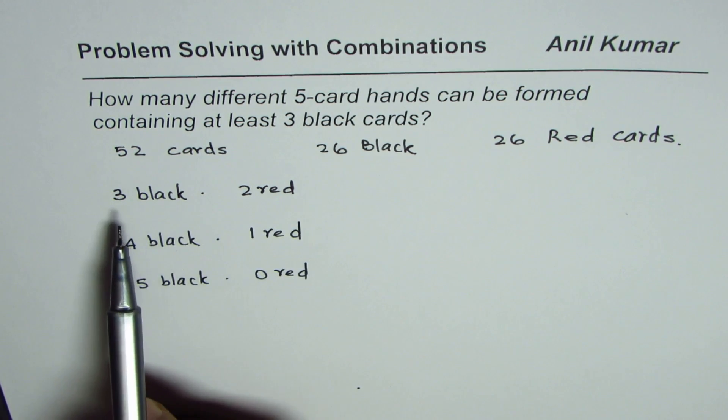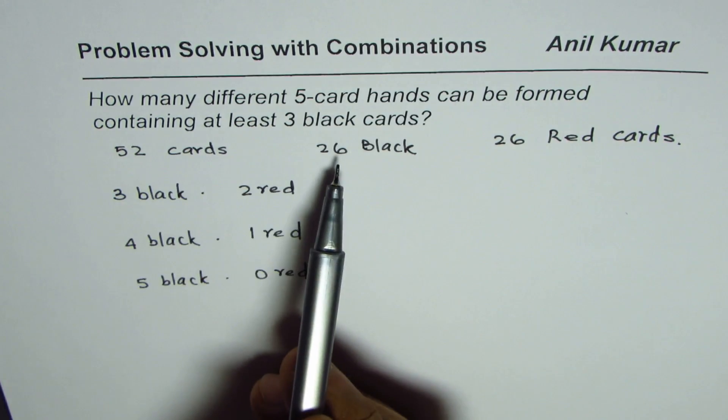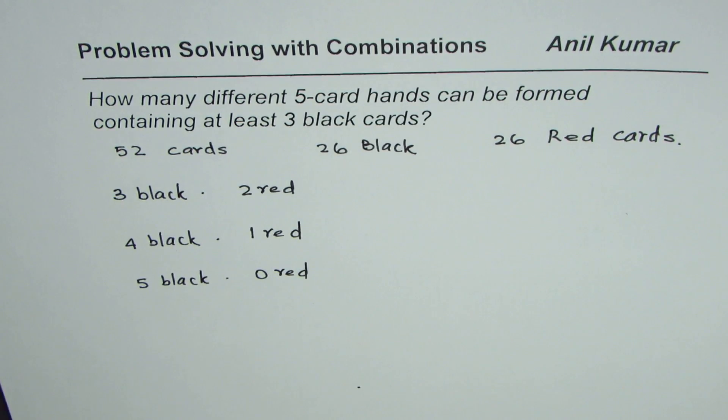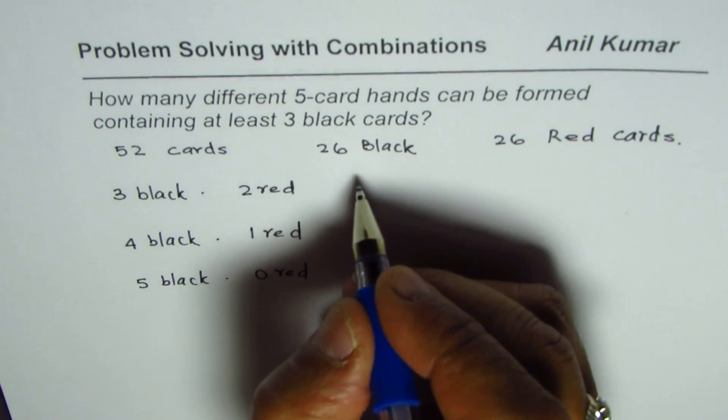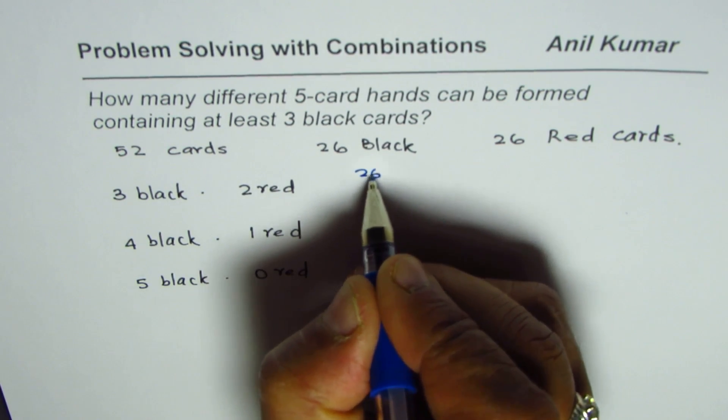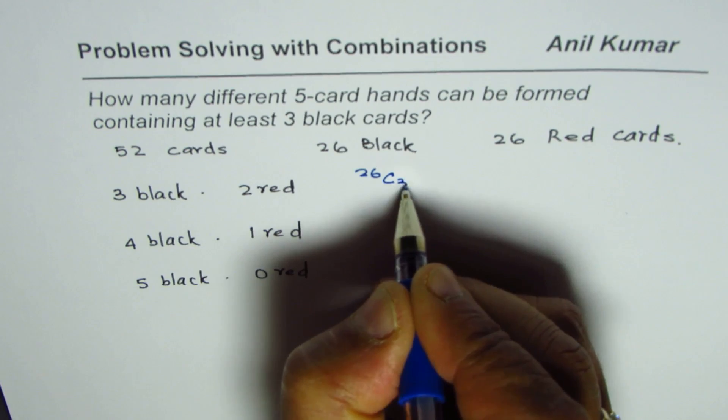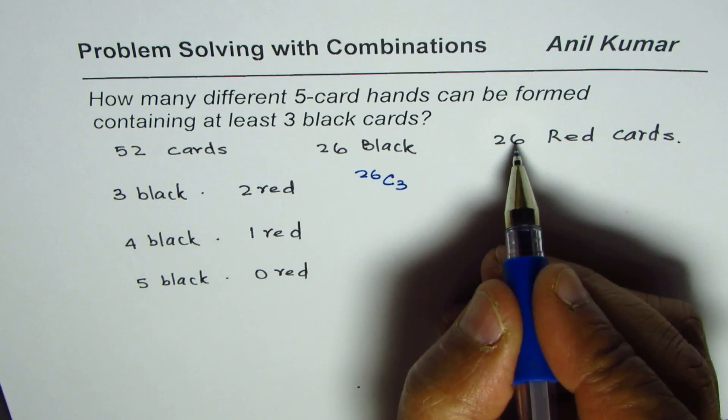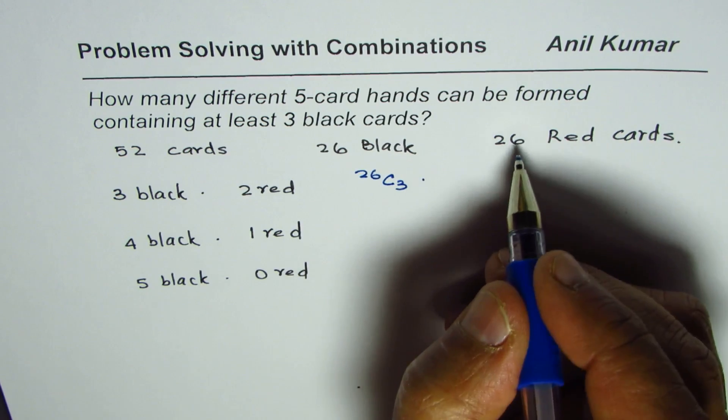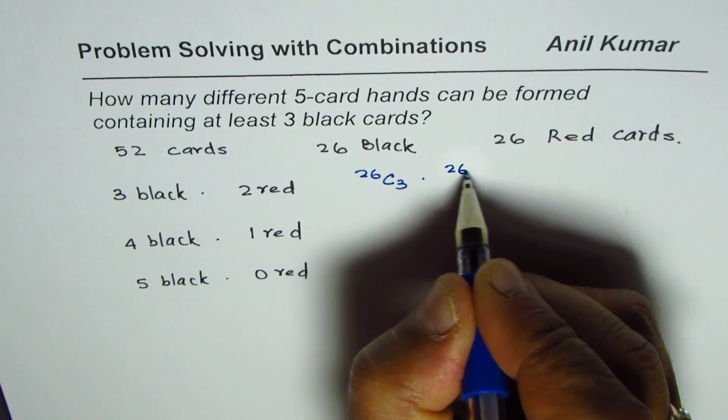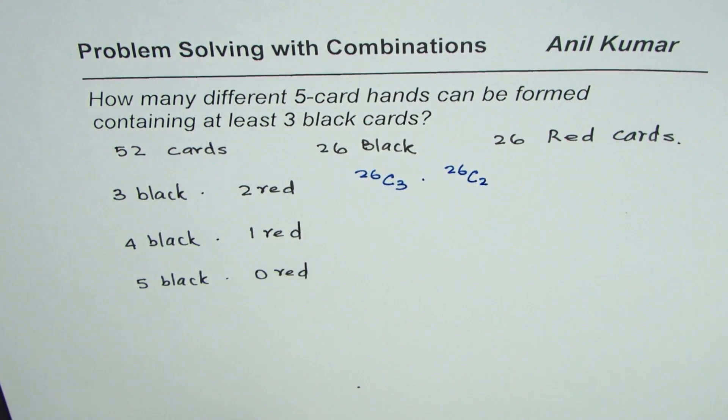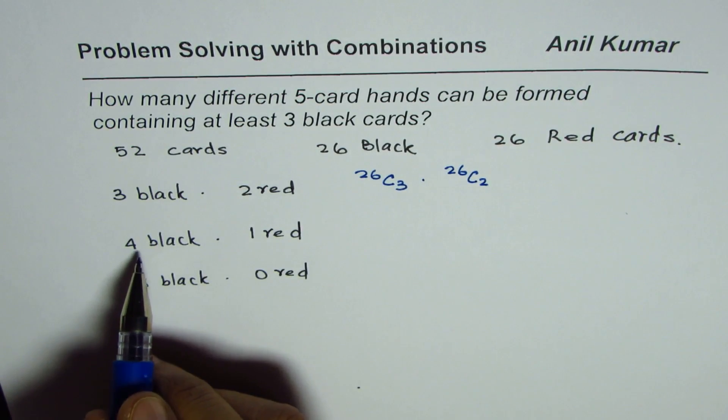Three black, we have to select from 26. Therefore, we could write this as 26C3. Two red from also 26 times. From 26, we are selecting two red cards.